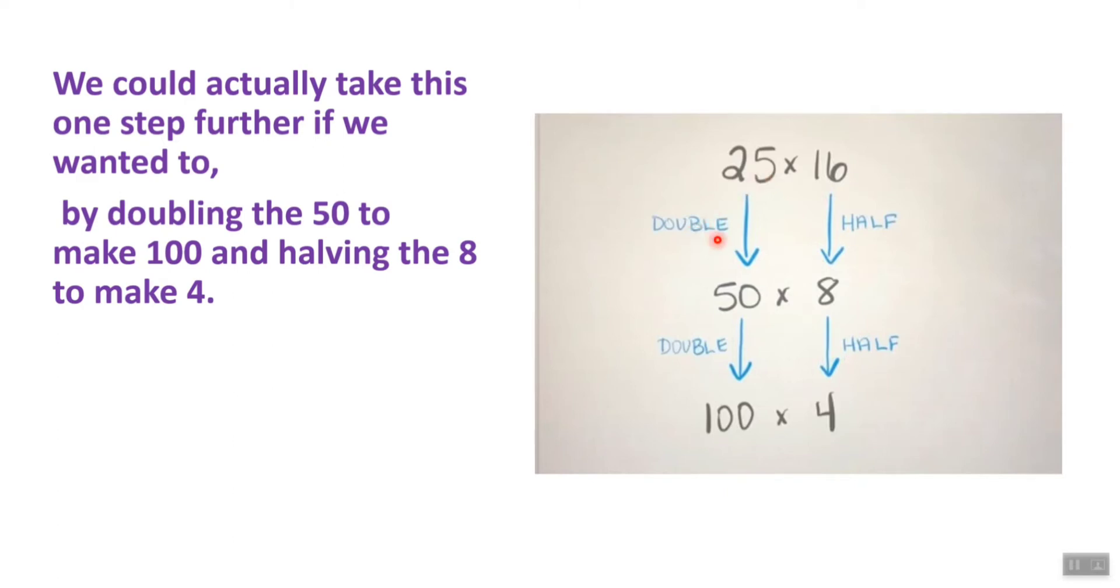We doubled 25 to get 50 and took half of 16 to get 8. If it's still not easy, we can double 50 to make 100 and take half of 8, which is 4. So 100 times 4 equals 400, which is even easier to solve.